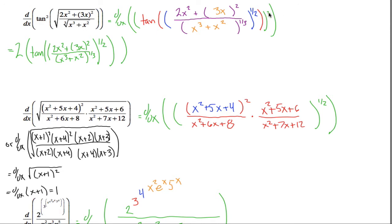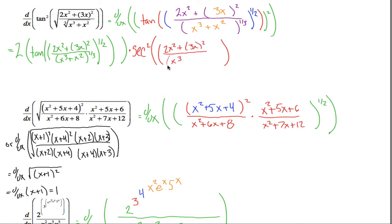I've taken the derivative of the green part. Now pretend the green's not there — the next layer is the red part. I have to take the derivative of the red part to apply the chain rule. The derivative of tangent is secant squared. I don't have tangent of x, I have tangent of some mess, so its derivative is secant squared of that mess — specifically 2x squared plus 3x squared over x cubed plus x squared. I've taken care of the tangent part, but there's another chain rule hidden inside that.